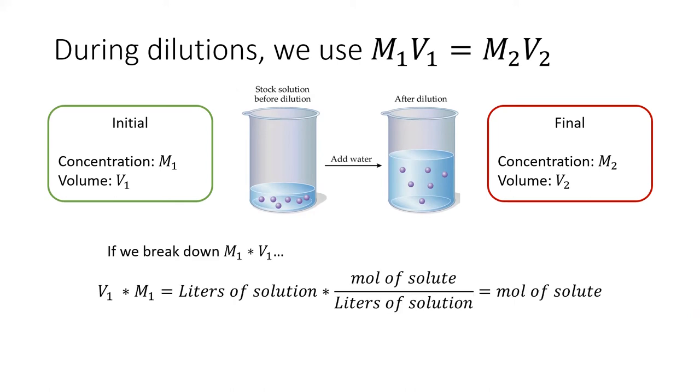To understand why this equation works, let's break down the units. Multiplying volume by molarity is multiplying liters by moles per liter. Notice that when we do this, liters cancel, leaving us with moles of solute only.